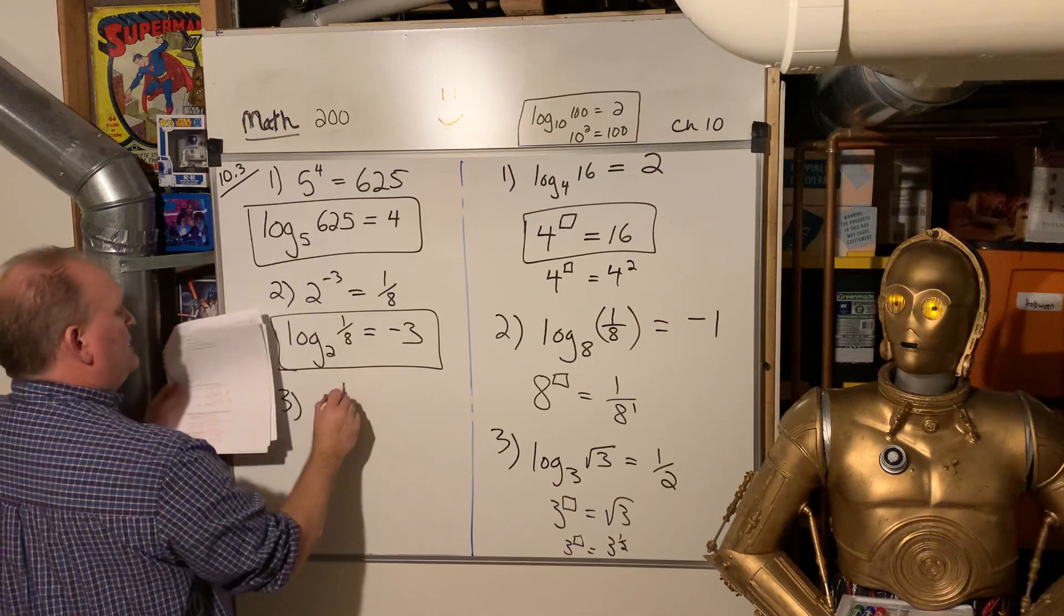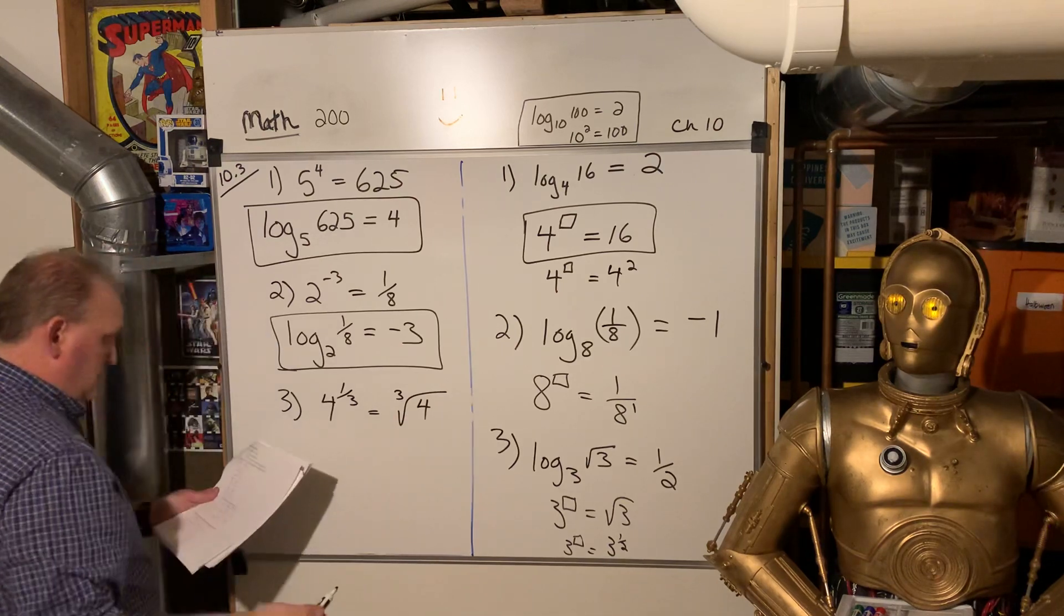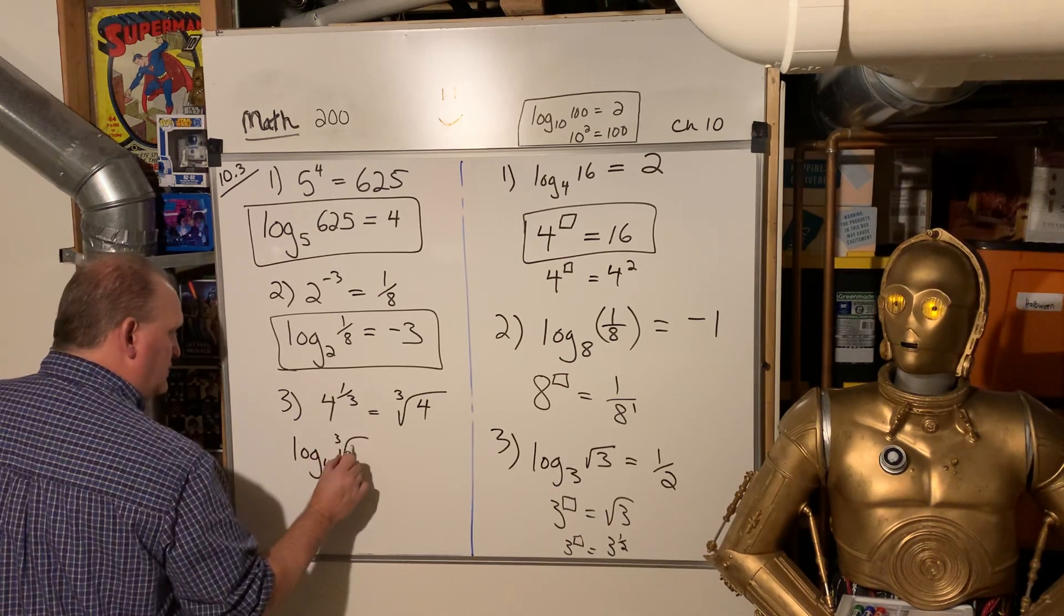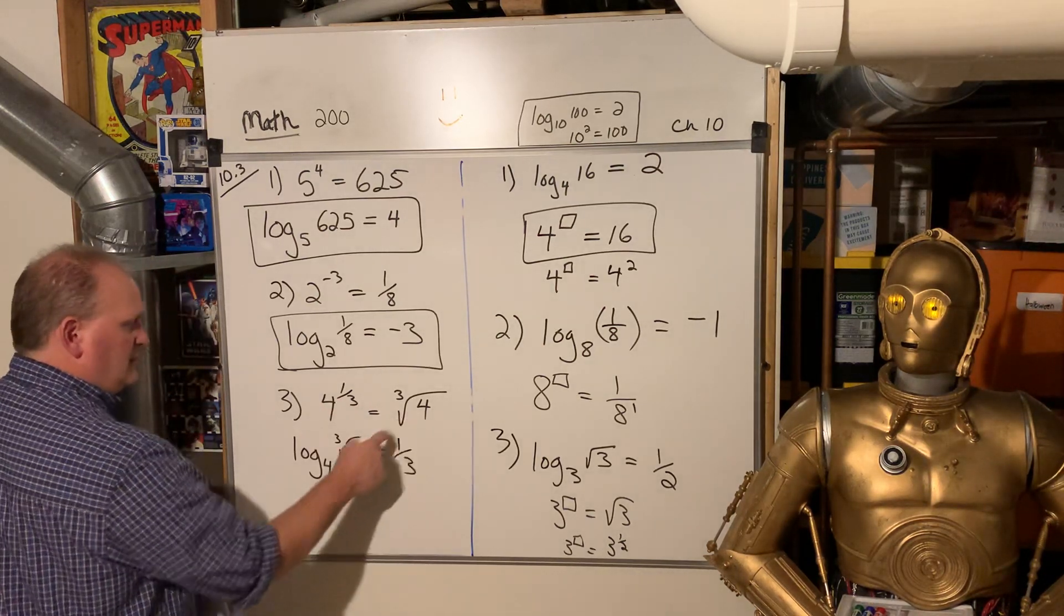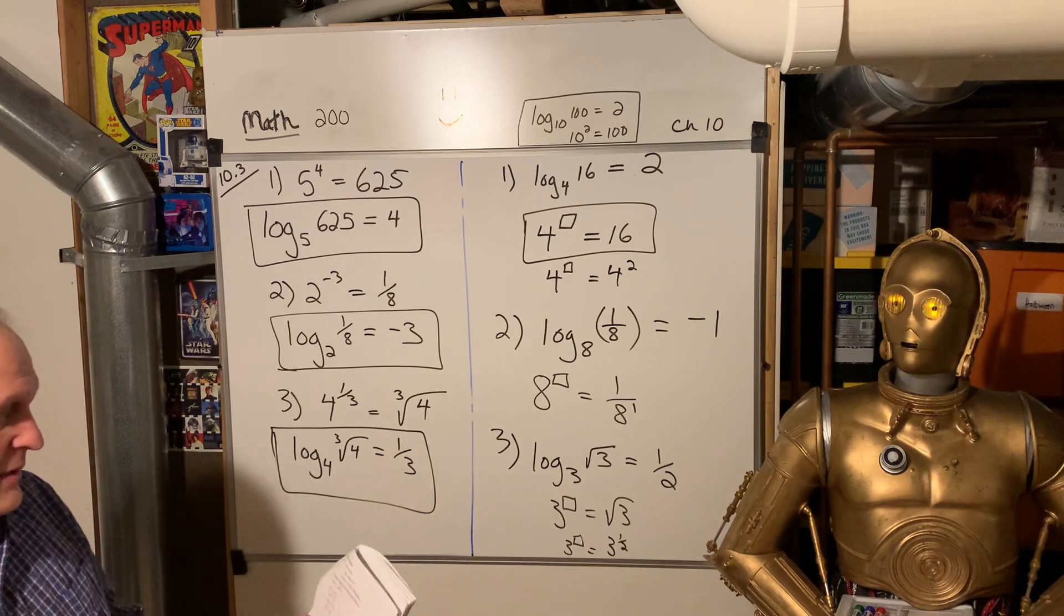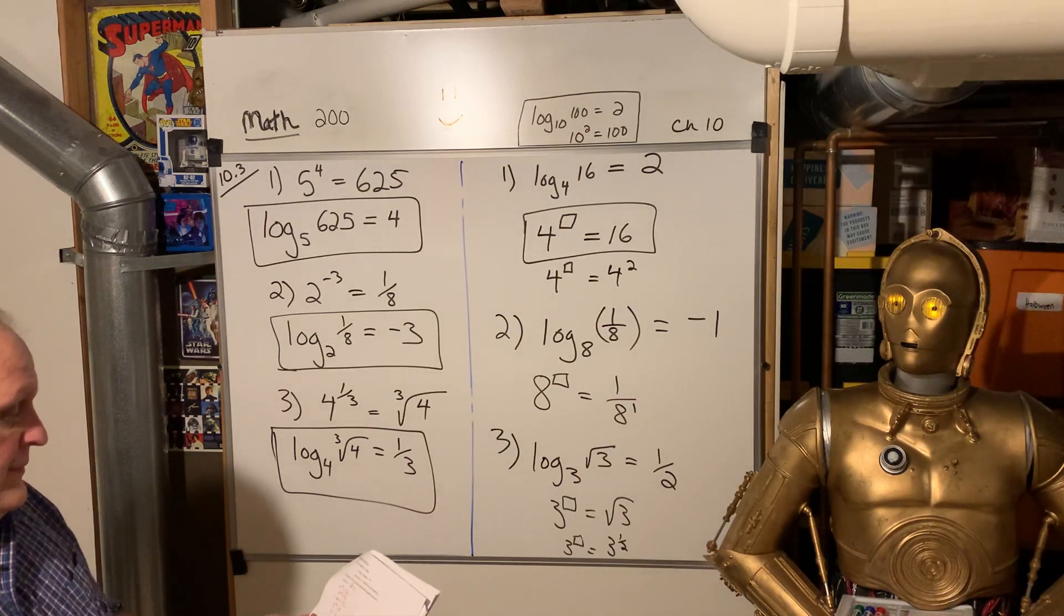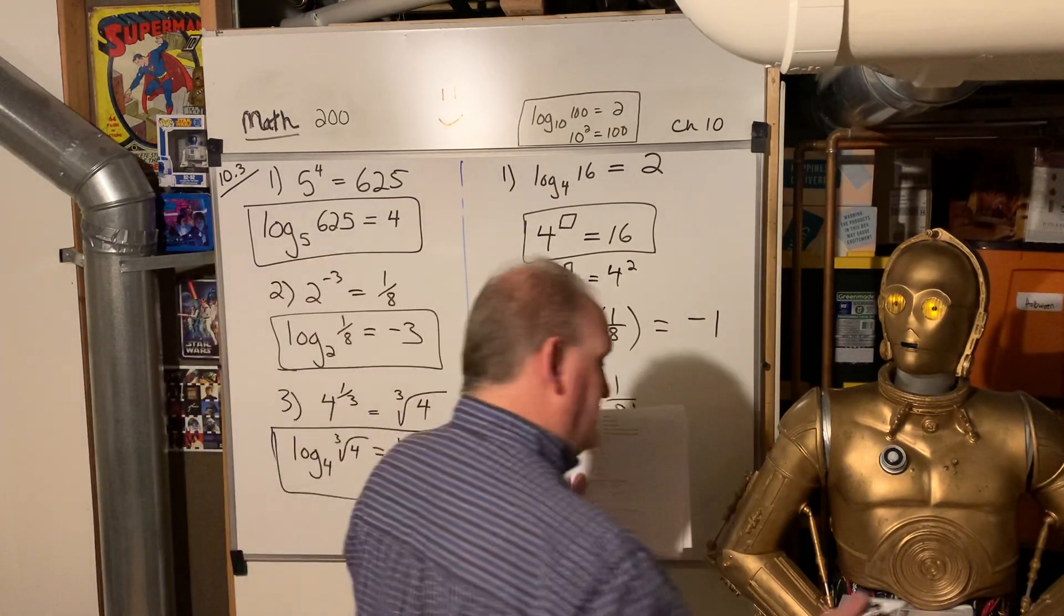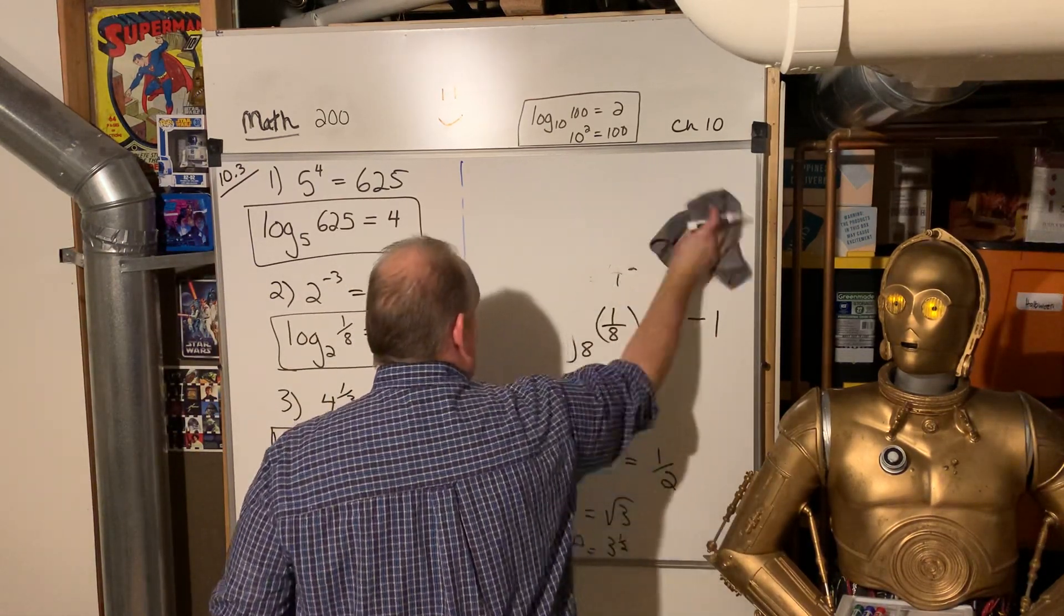Three, four to the one third power is equal to the third root of four. Okay. So this is log base four of the cube root of four is equal to one third. The power goes over by itself. This goes after the log. That goes as the base. All right. Okay. Lovely, dobbly. So we found two negative one and one half, and we wrote those as logs. How about solving some other problems like this again? Different numbers.